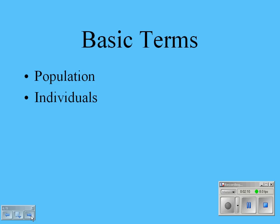The individuals are the particular people or items that make up the population. So the population could be the student body at A&M Consolidated, where the individuals would be the students. The population could be high schools in Texas, and one of the individuals would be A&M Consolidated High School.